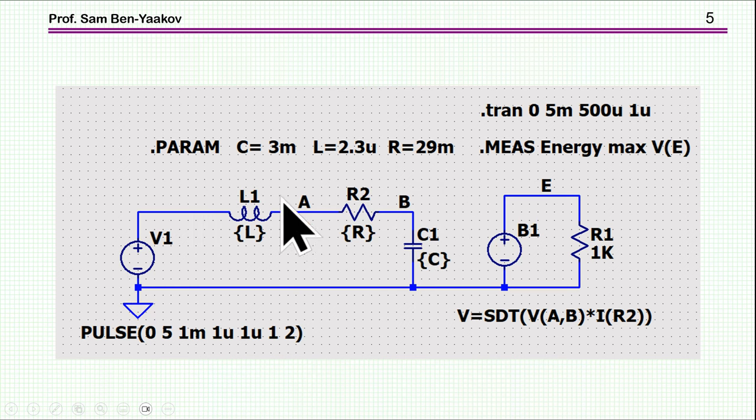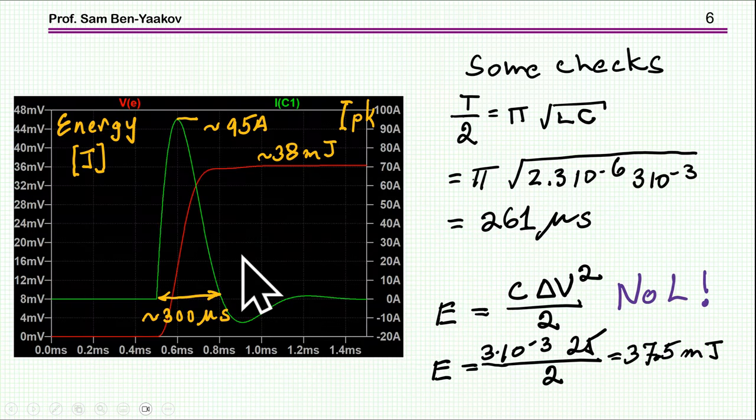And a total resistance of 29 milliohms. This is the internal resistance ESR of the capacitor, the battery, as well as the cable. For the nominal value, you see that we have here a current, a peak current of 95 amps. This is the energy loss—you see it's accumulating and it comes to about 38 millijoules.